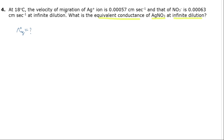We have the information like velocity of migration of silver plus ion and velocity of migration of nitrate ion. Remember this one thing: velocity of migration is to be taken as centimeter per second per volt. Velocity of migration is given in centimeter per second per volt.